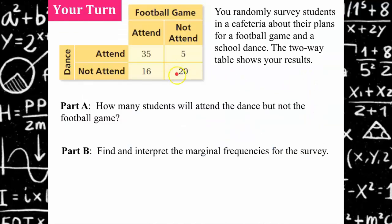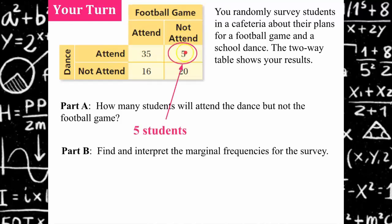Your turn. I'm providing you with a data table — students were randomly surveyed in a cafeteria about their plans for a football game and a school dance. Pause the video, answer parts A and B, then come back. For part A: how many students will attend the dance but not the football game? Going to the dance-attend row and not-attend-football column — 5 students are attending the dance but not the football game.